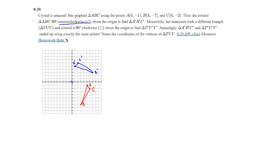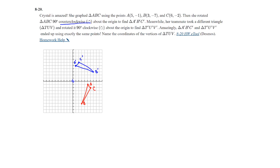Meanwhile, her teammate took triangle TUV and rotated it 90 degrees clockwise about the origin to get T prime, U prime, and V prime — and amazingly, the two new triangles used exactly the same points. To find TUV: since TUV rotated 90° clockwise lands on A′B′C′, we rotate A′B′C′ 90° counterclockwise to find the original T, U, and V.